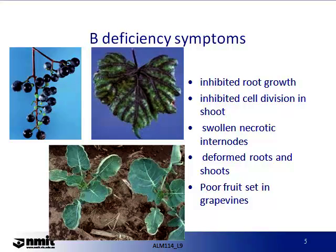Boron deficiency symptoms include inhibited root growth, inhibited cell division in the shoot, swollen necrotic internodes, deformed roots and shoots, and poor fruit set in grapevines. Boron is highly immobile in the plant, so deficiencies are recognisable by yellowing and whitening of the youngest leaves and terminal bud. Boron deficiency also results in shortening of internodes, giving the plant an abnormal or bushy, almost rosette-like appearance at the top of the stunted plant.